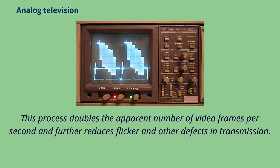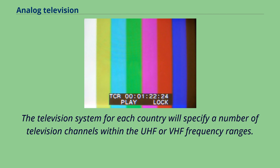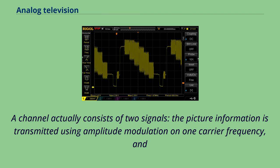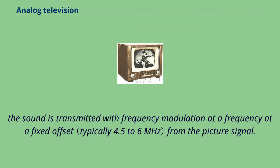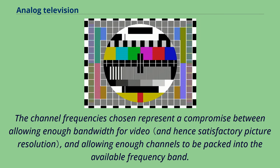The television system for each country will specify a number of television channels within the UHF or VHF frequency ranges. A channel actually consists of two signals. The picture information is transmitted using amplitude modulation on one carrier frequency, and the sound is transmitted with frequency modulation at a frequency at a fixed offset from the picture signal. In practice a technique called vestigial sideband is used to reduce the channel spacing.